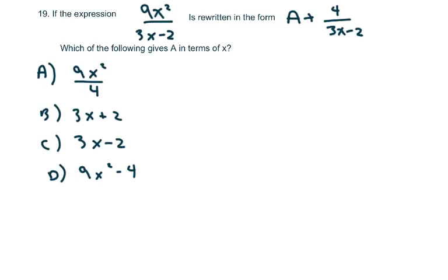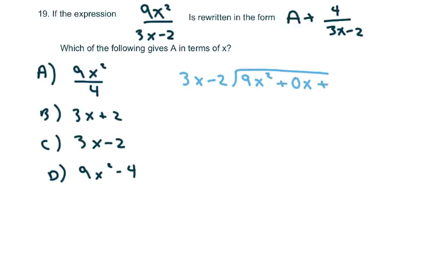The next problem is essentially partial fraction decomposition. It says: if the expression 9x² divided by (3x - 2) is rewritten in the form a + 4 over (3x - 2), what is a in terms of x? Basically, you want to divide 3x - 2 into 9x², and go ahead and put your placeholders for x and the constant.